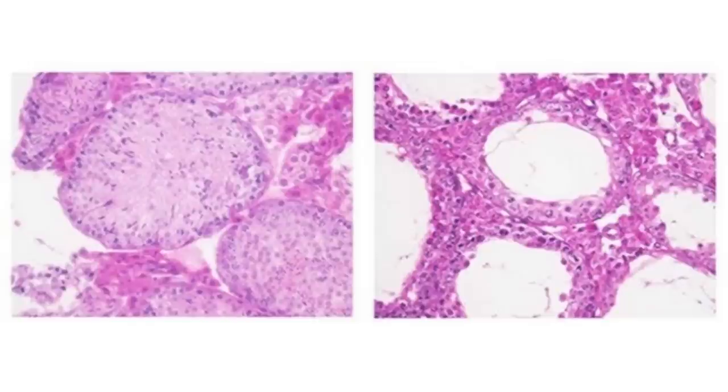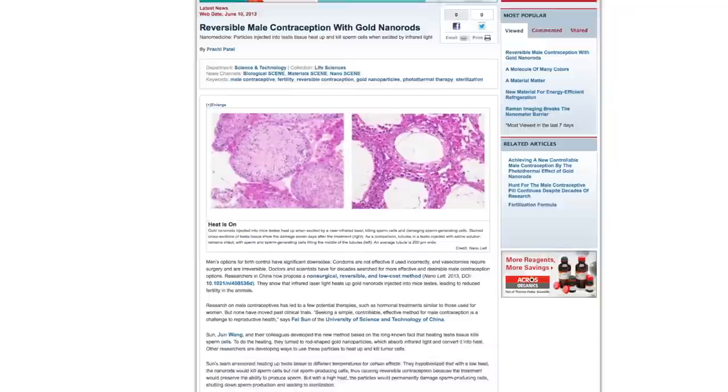A new reversible male contraceptive proven effective in mice testicles involves injecting gold nanorods and heating them up.